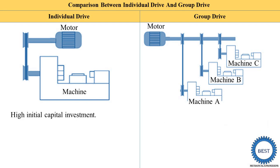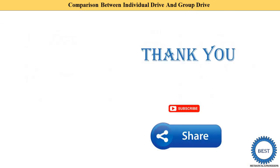The last point: individual drive requires high initial capital investment because every machine has a separate motor, increasing the cost. In a group drive, there is less initial capital investment because only one electric motor needs to be purchased. Even though it has a larger capacity, the cost of buying one heavy motor is comparatively less than buying 10 separate electric motors.